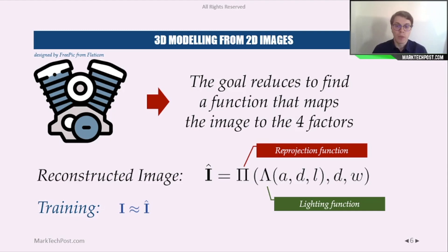The neural network, which is here the function, is then trained to return these four factors and using them to reconstruct the image. The image is reconstructed using a lighting function, which uses the albedo, the depth, and the lighting, and the re-projection function. The model is optimized, is trained to reconstruct an image which is closer to the original one.